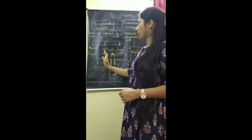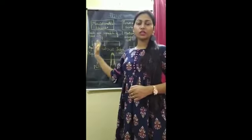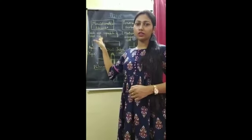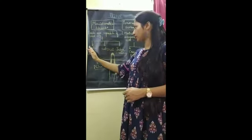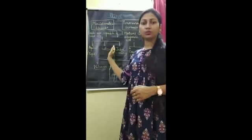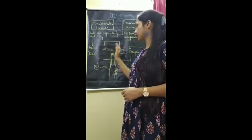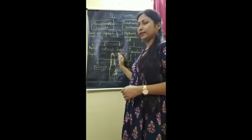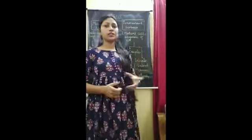Meristematic tissues have the capability to divide and can be further divided into three parts: apical, lateral, and intercalary. Now we will see the permanent type of tissues.